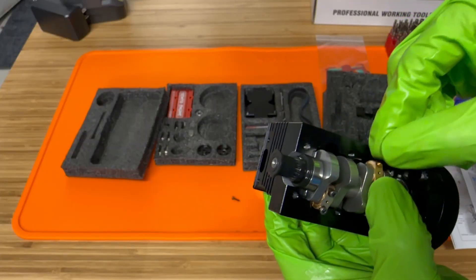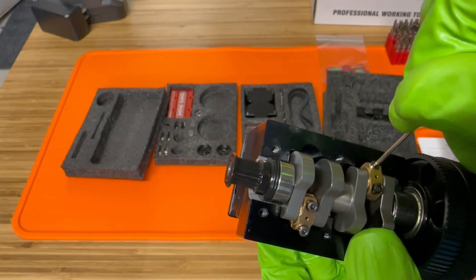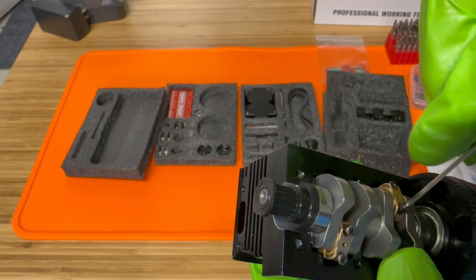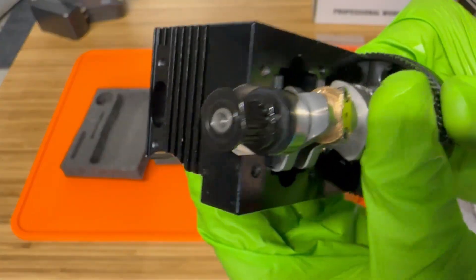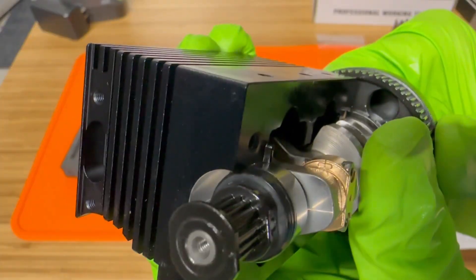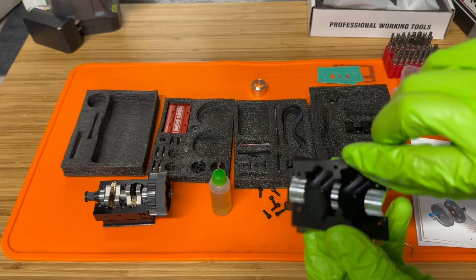Now you want to make sure that these connecting rod caps are on a correct orientation. So when I torque these down here, these rod bolts, I'll show you what I mean. So right here you'll see that right there. It's keyed. So you want to make sure that they are lined up correctly.